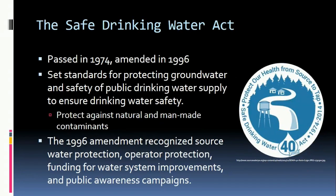The Safe Drinking Water Act came shortly after the Clean Water Act, in 1974. This law helped set standards for protecting groundwater to maintain the safety of public drinking water supply from natural and man-made contaminants. An amendment in 1996 strengthened the law by recognizing source water protection, operator protection, funding for water system improvements, and public awareness campaigns.